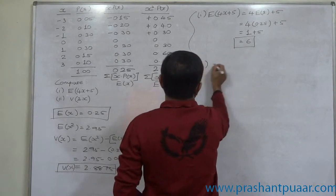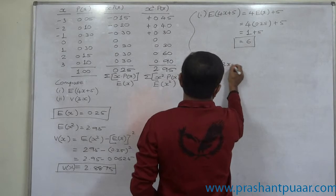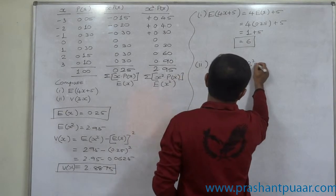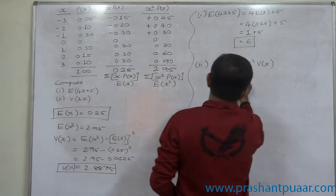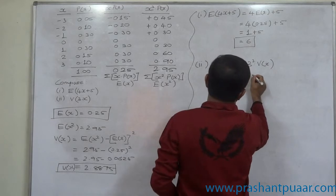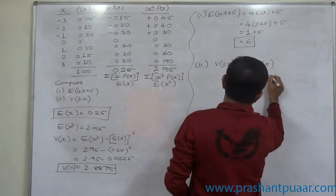Second is V of 3x and we know that it is 3 square into V of x. That is 9 into 2.8875. It is 25.98 approximately.